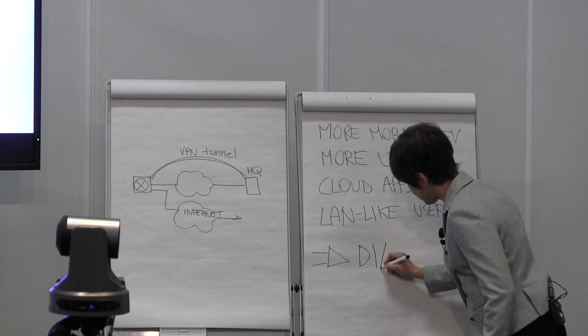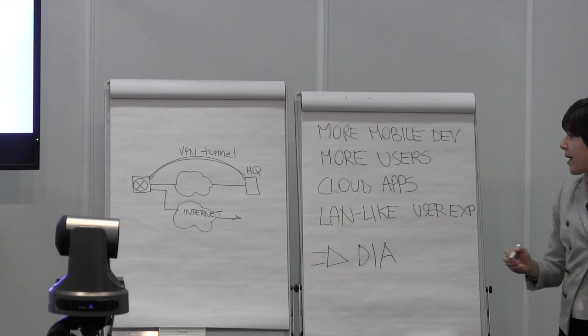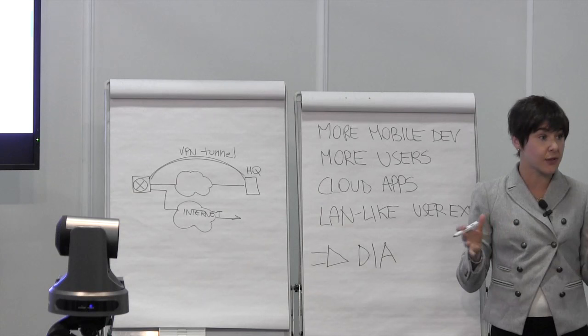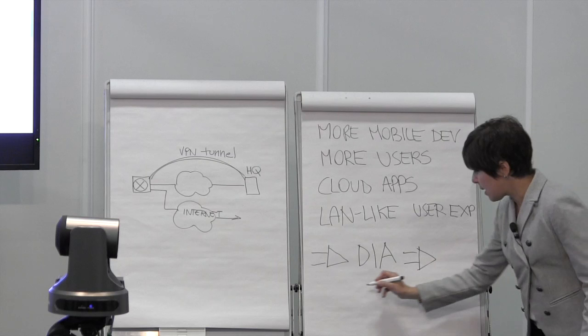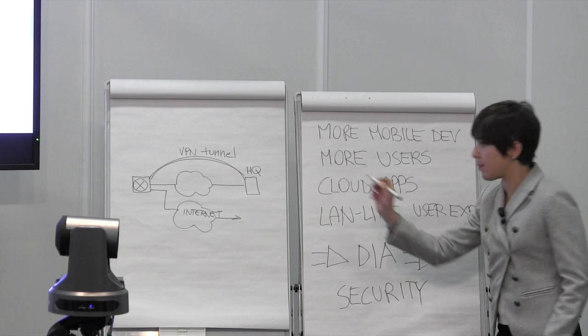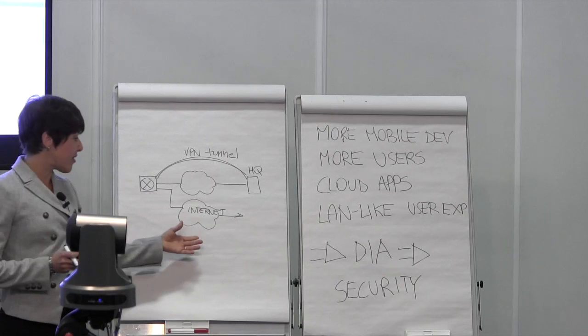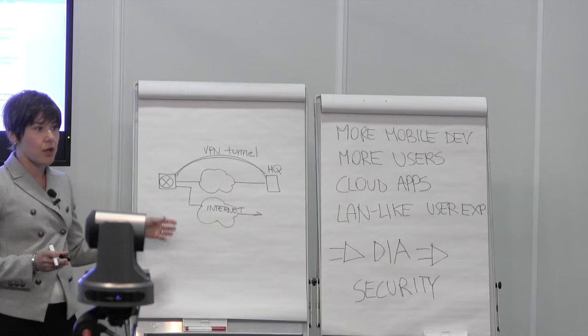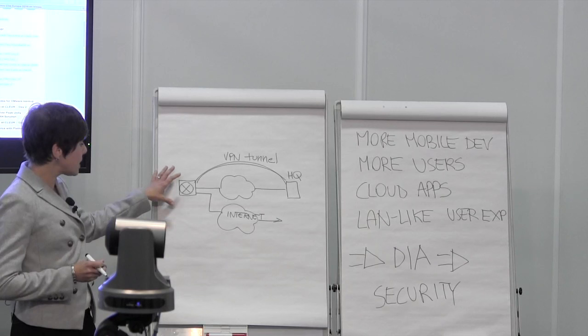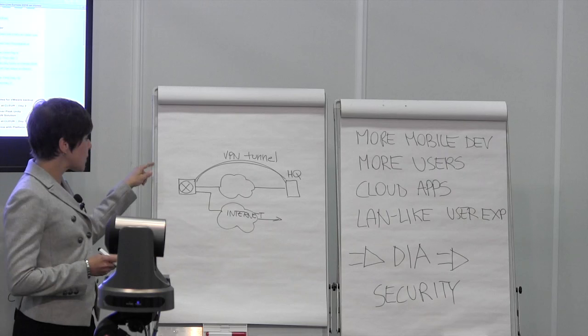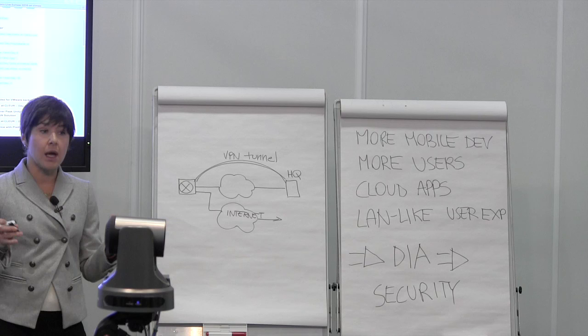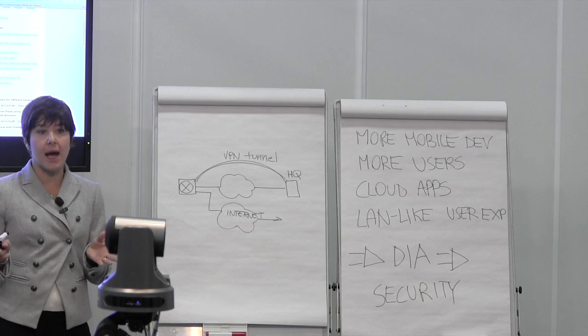With direct internet access, the moment you open up your branch to the internet, you immediately increase the vulnerable attack surface at your branch. So security needs to be top of mind in any branch network design. Today we are going over deployment scenarios where enterprises can safely leverage direct internet access by securing their branch through a series of technologies available on the ISR branch routers, without needing to deploy additional appliances.